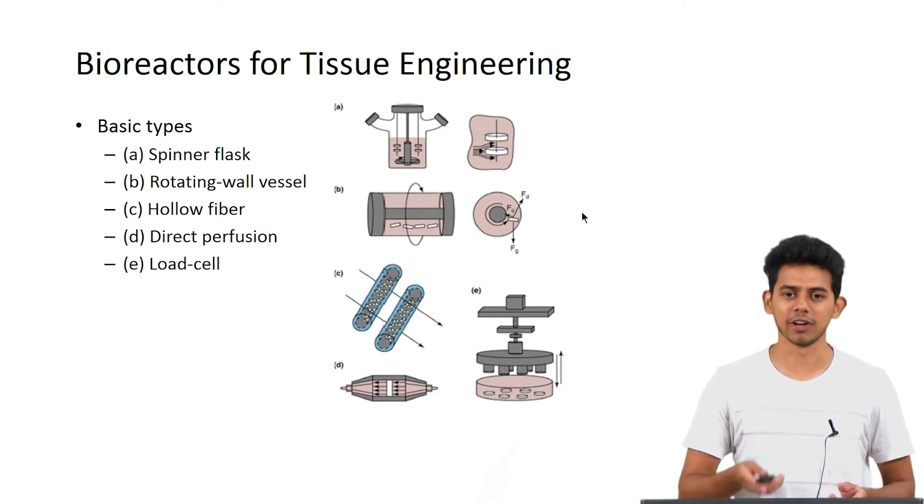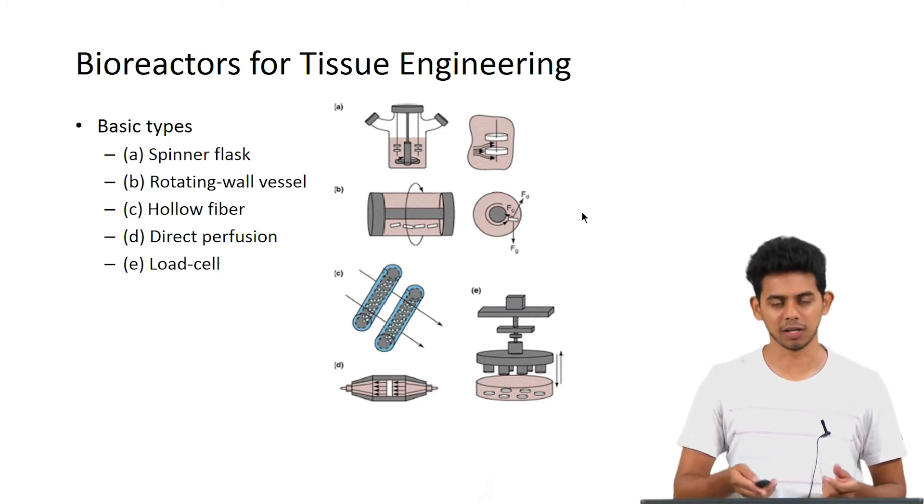Then load cell bioreactors. This is when the tissue that you are growing requires some sort of mechanical force to grow in the right way like tendons or bones. You can simultaneously stretch or compress the tissue as they are forming, thereby giving it the physiological conditions required for its development.